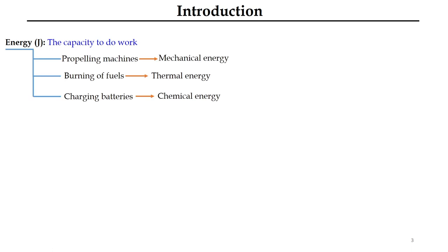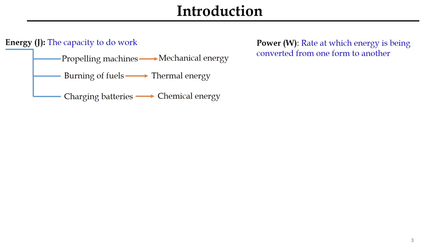Before we start with the power plant, let us discuss some fundamental aspects. Energy is the ability to do work. It may be propelling machines to convert mechanical energy, burning fuels to convert chemical energy, and charging batteries, which is nothing but conversion of chemical energy. Power is the rate at which energy is being converted from one form to another.